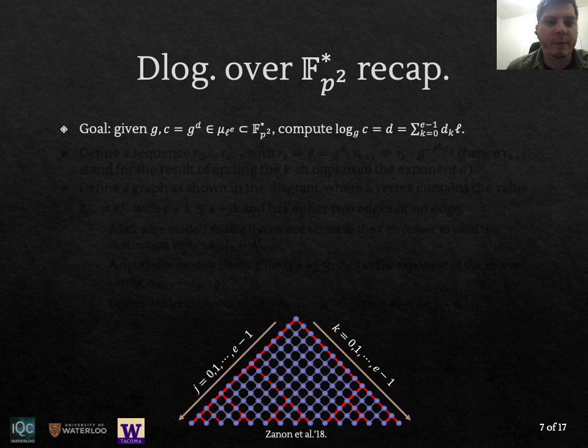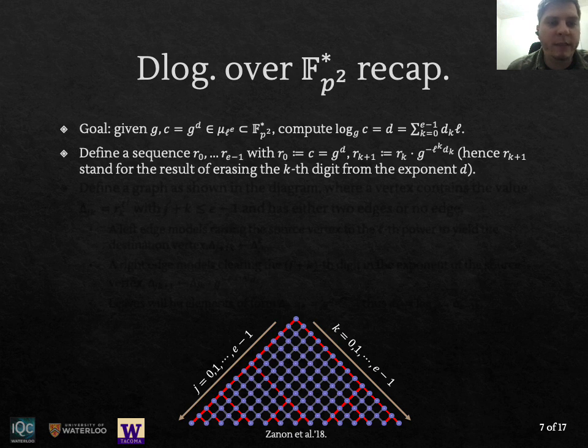We now reveal how to compute smooth order discrete logarithms over the finite field. We are given a generator G of order ℓ^e of the finite field and a challenge of the form G^d where the exponent d is represented in base ℓ where the digits are smaller numbers mod ℓ. In the original Pohlig-Hellman it was suggested to solve this problem by computing a sequence R_0 up to R_{e-1} where it starts R_0 with the challenge and then it starts recovering the partial digits d_0 up to d_k up to d_{e-1} by doing consecutive exponentiations by ℓ and solving smaller discrete logarithms and then removing the computed digits from the previous R's to compute the next R's.